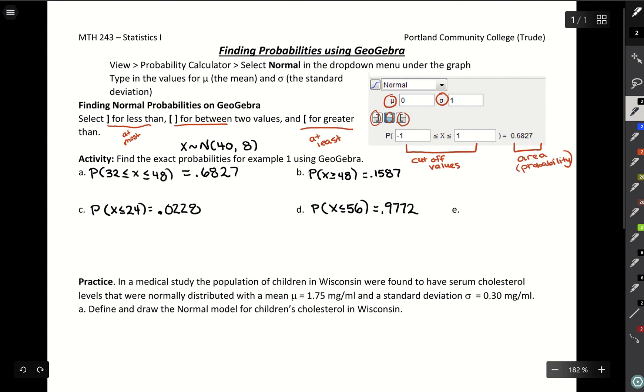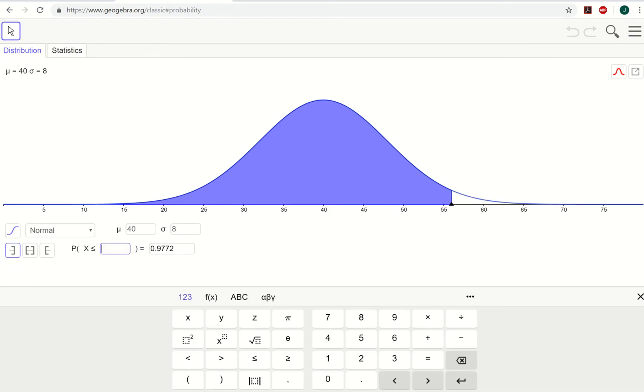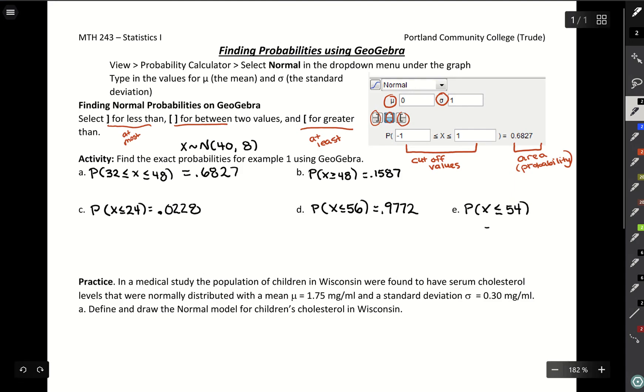And then that last one that we couldn't do before because of the empirical rule, looking for less than or equal to 54. Now what we can do is plug it in. We go and just change instead of 56 to look at 54, and there's a 0.9599. With this, we can type in any number we want for our cutoff values. We can plug in whatever we want and find the different areas.